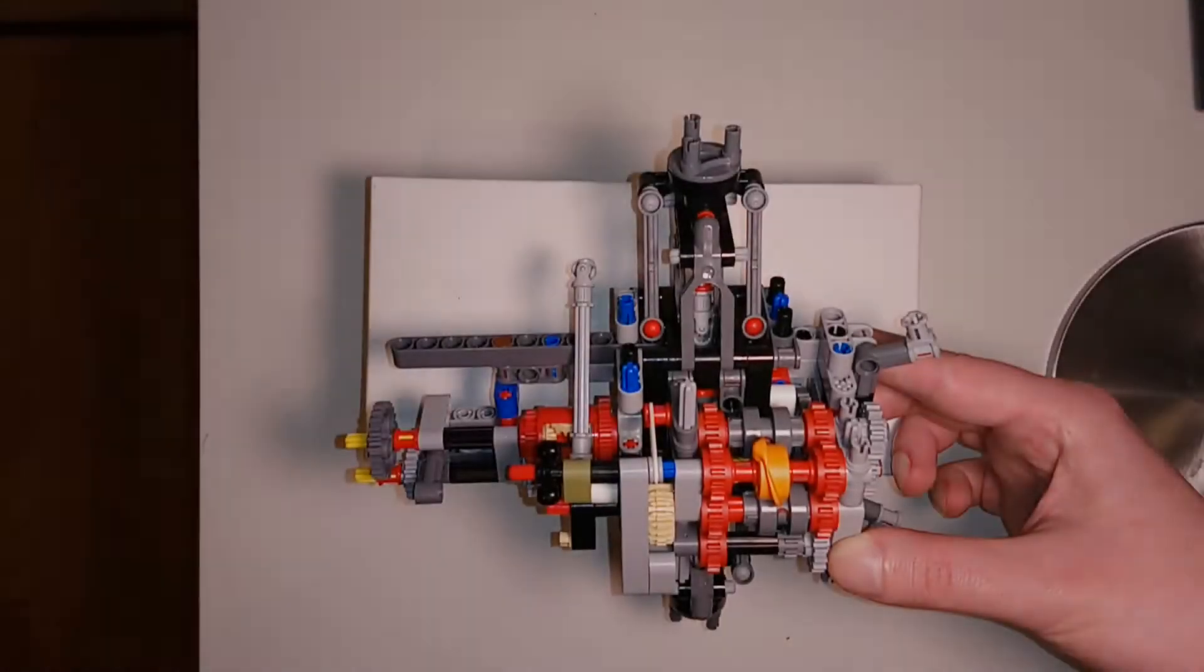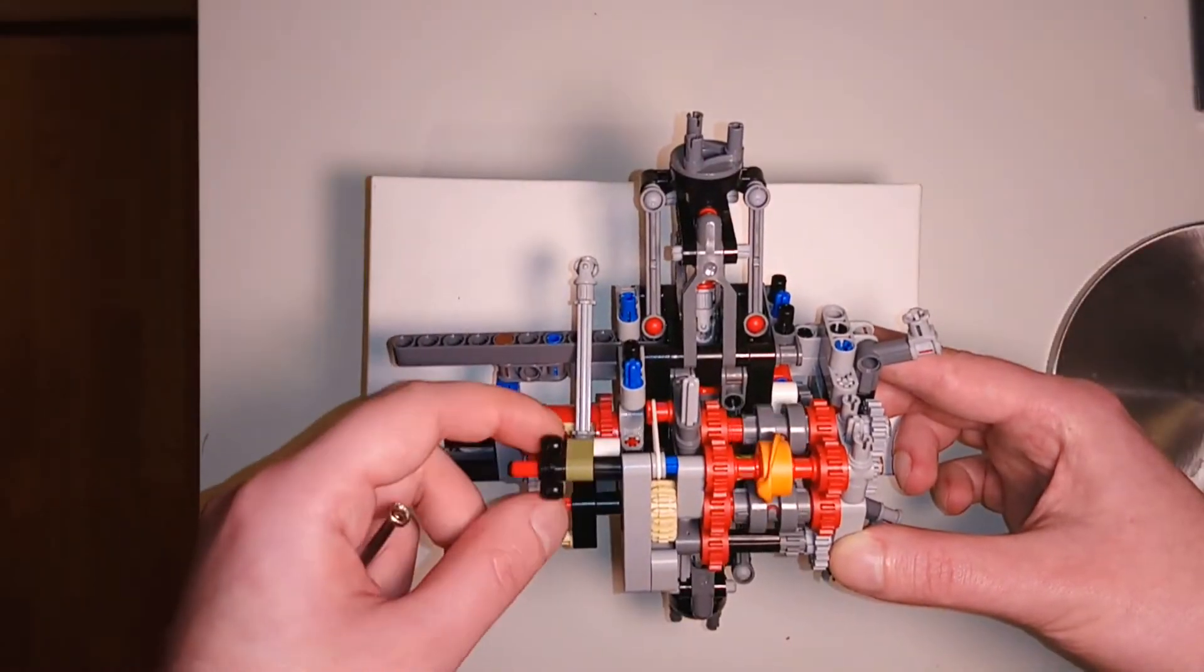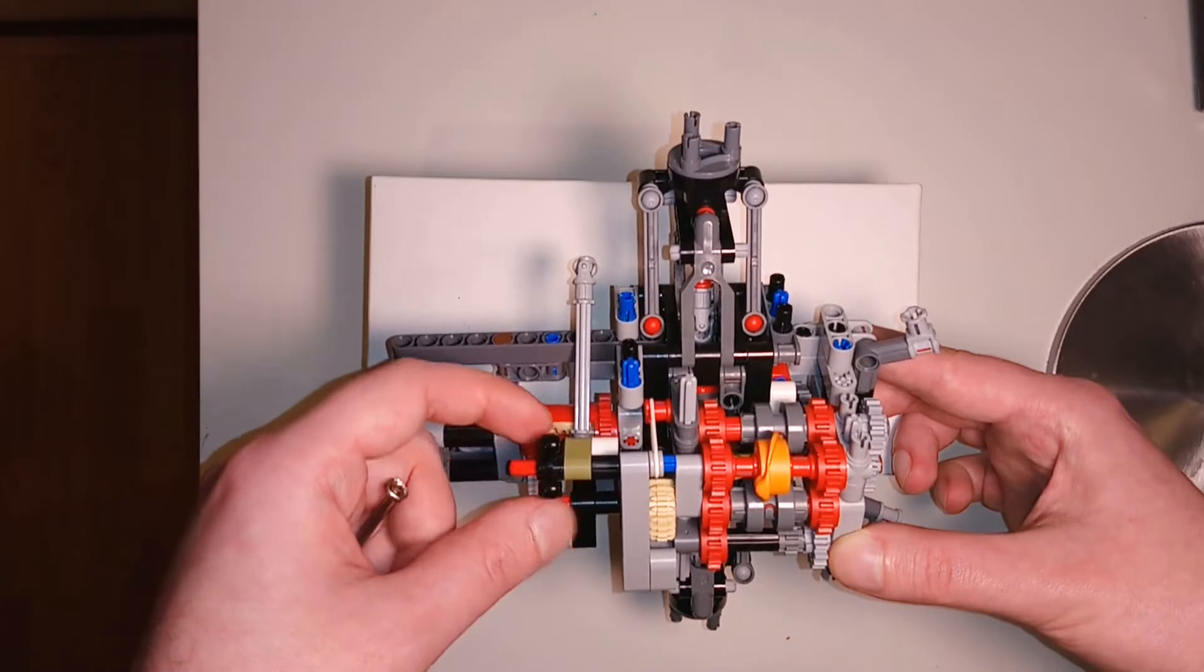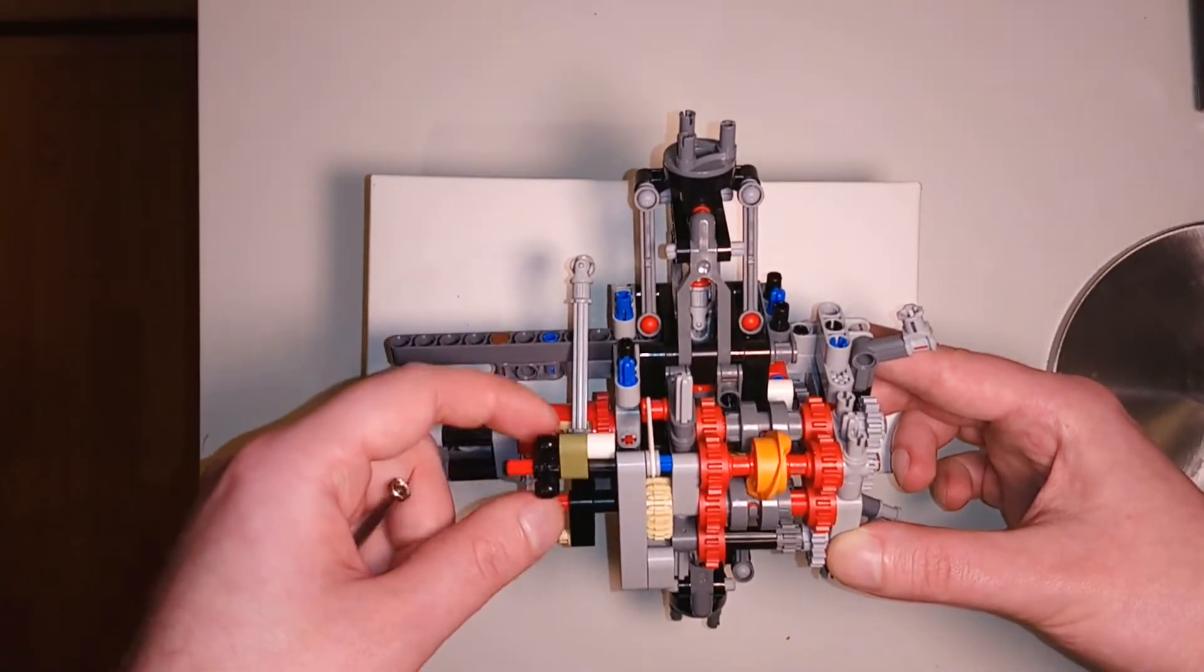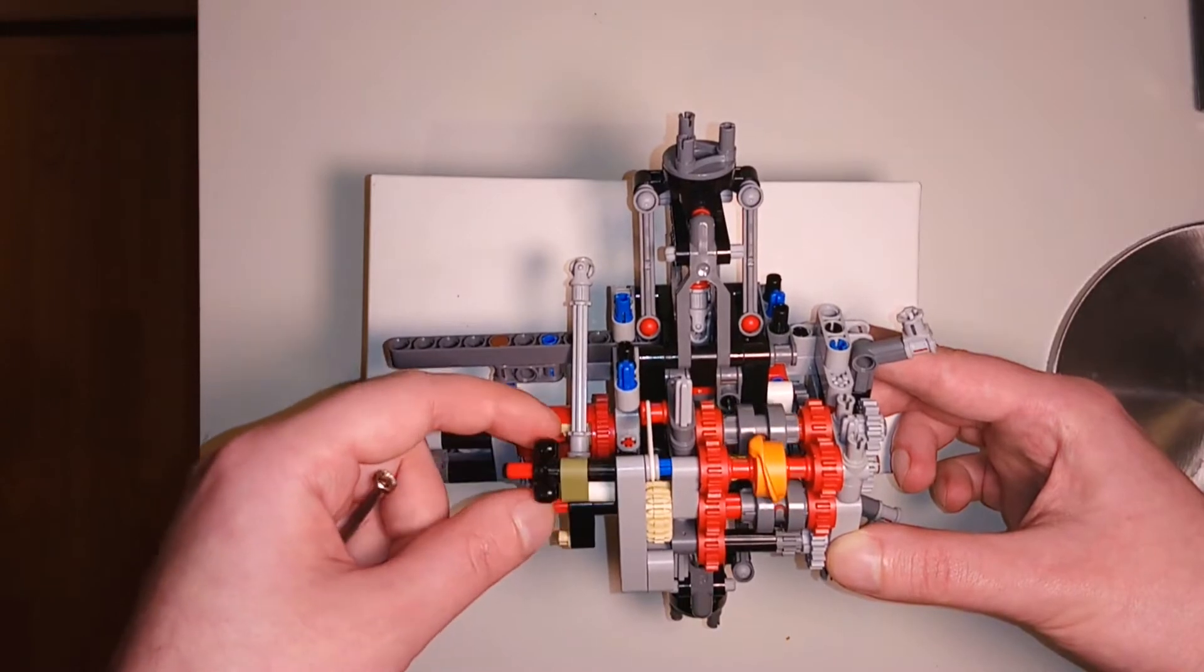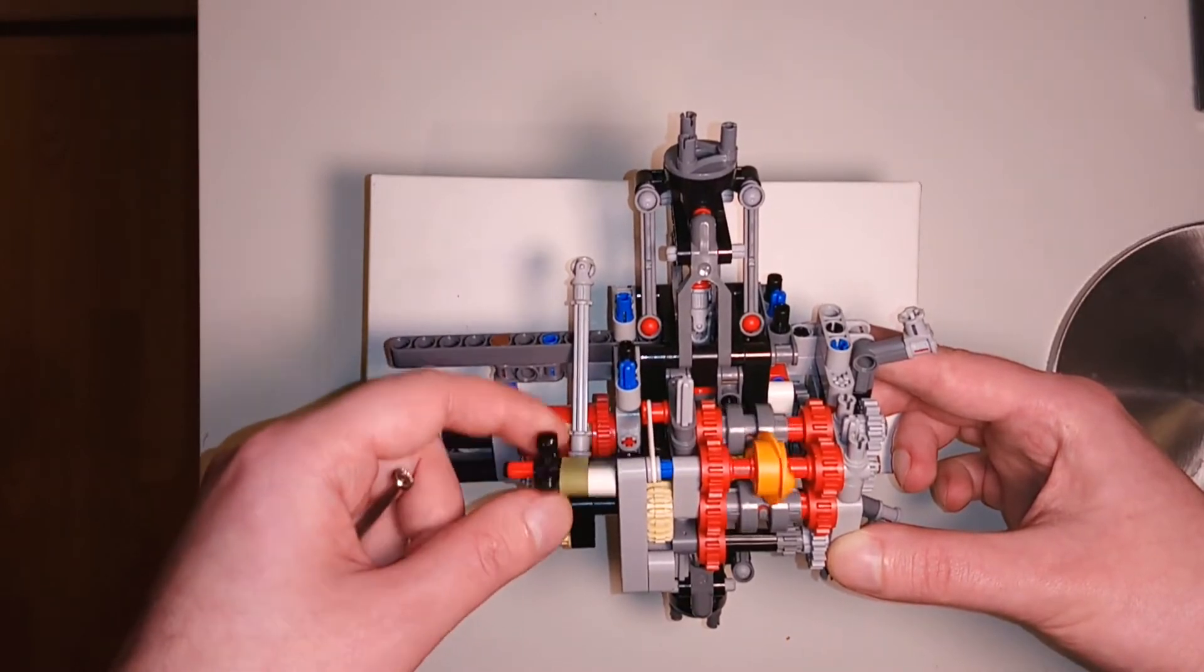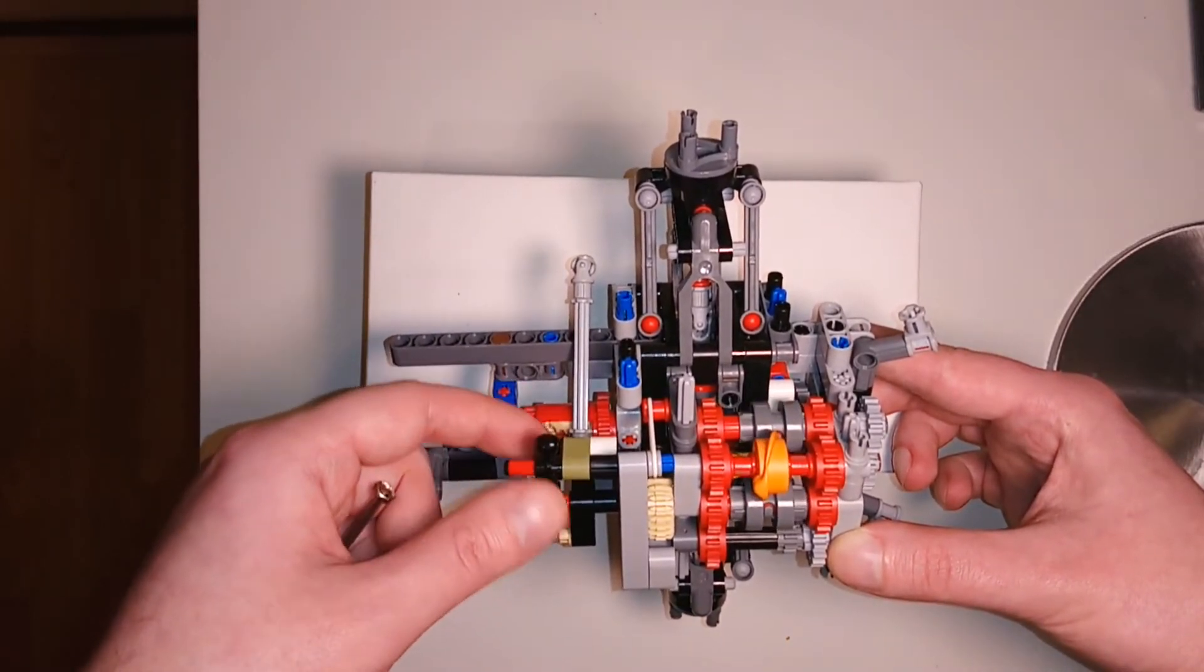By shifting the positions of the two gray pieces, a gear is selected. And to make sure only one gear is ever selected at the same time, the two gray pieces move 90 degrees out of phase. This makes it possible to select between four different gears.